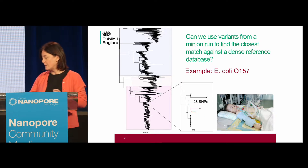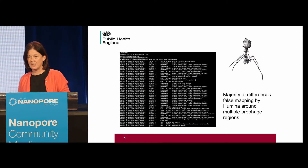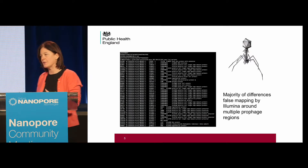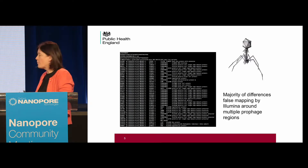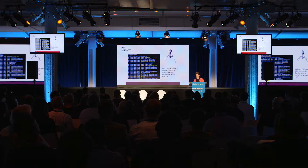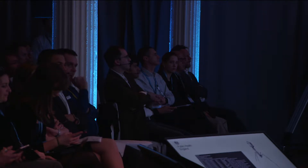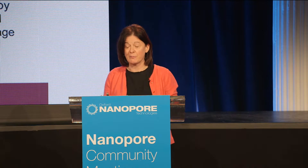But when Tim looked in more detail — Tim Dolman is our lead bioinformatician in the gastro lab at PHE — he saw that the discrepant bases were not distributed evenly throughout the genome, but were clustered in the prophage regions. What he's suggesting is that the majority of the discrepant SNPs we see are false positives in the Illumina data around the prophage regions, of which there are many in E. coli O157.